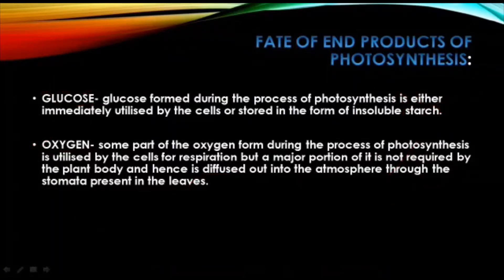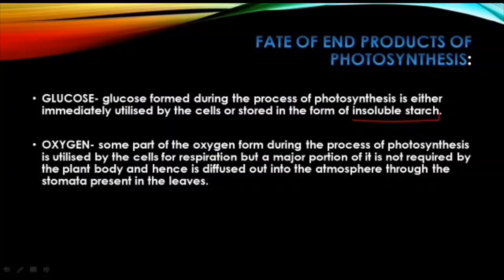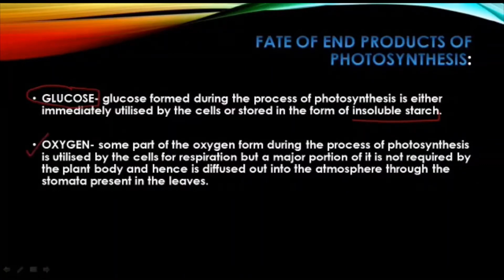Now let us see what happens to oxygen. Some glucose is utilized by the cells of the plant body and the remaining is stored as insoluble starch. Starch is insoluble, but glucose is soluble in nature, and that is why it can be easily transported to different parts of the body through the phloem in the form of a solution.